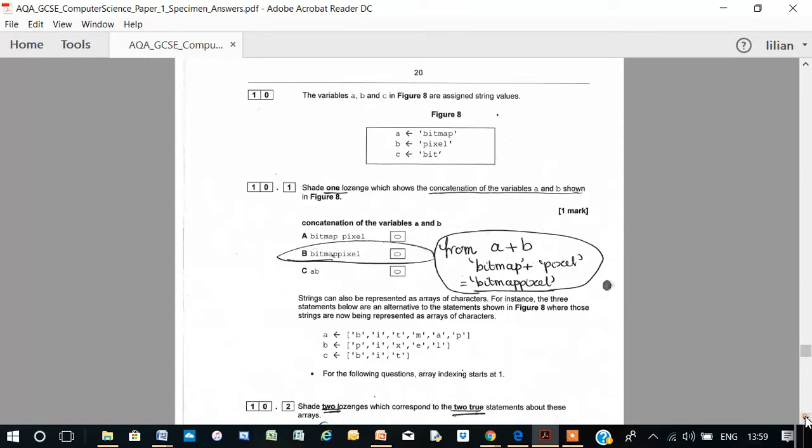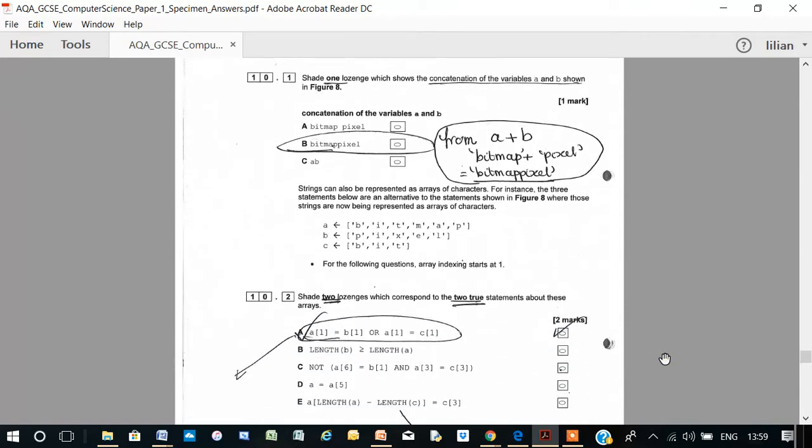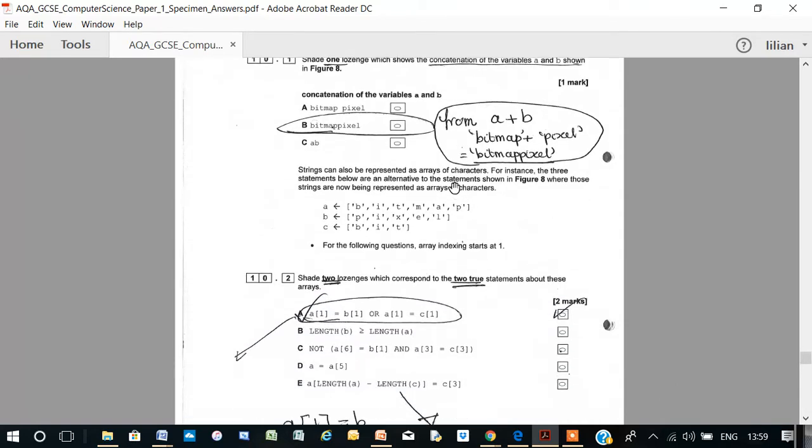Now let's look at the next one. Strings can also be represented as arrays of characters. For instance, the three statements below are an alternative to the statements shown. When these strings are now being represented as arrays of characters.